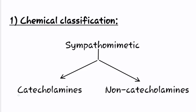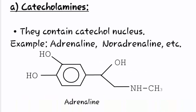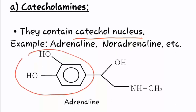In the chemical classification, sympathomimetic drugs could be categorized into two types: first is catecholamines, and second is non-catecholamines. Catecholamines contain a catechol nucleus in their structure. Examples are adrenaline and noradrenaline. This is the structure of adrenaline, which contains the catechol nucleus in it.